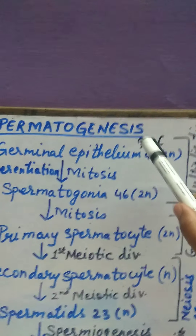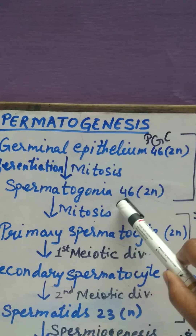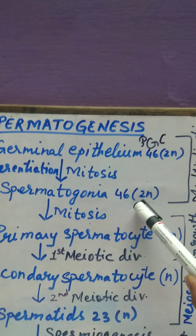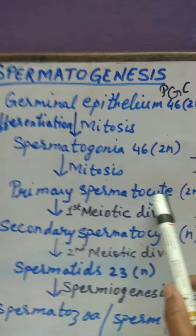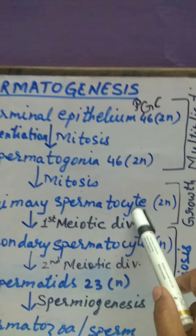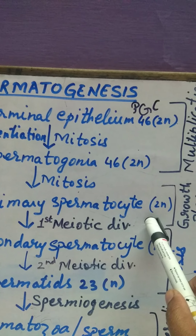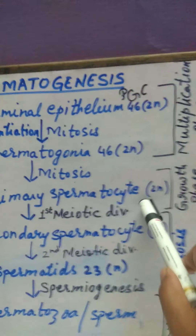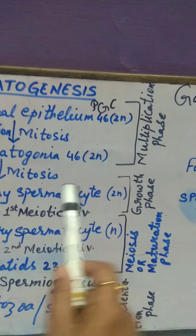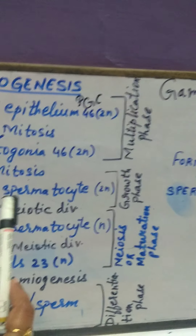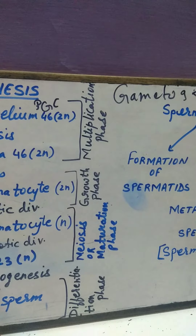The primordial germ cells, which are diploid, divide mitotically to form diploid spermatogonia. Then the diploid spermatogonia divide mitotically into two primary spermatocytes. From here, the phase of growth begins. During the growth phase, the primary spermatocytes undergo enlargement in size and are prepared to undergo meiotic division.